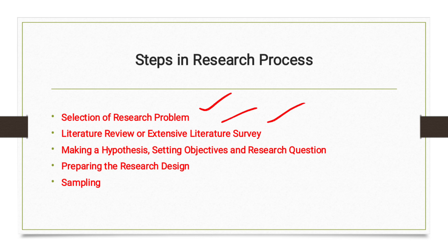The second step is literature review, also called an extensive literary survey. After the selection of a research problem, the researcher reviews literature mostly connected with the topic. The availability of literature may bring ease to the research. For this purpose, academic journals, conference proceedings, government reports, and library resources must be studied well.